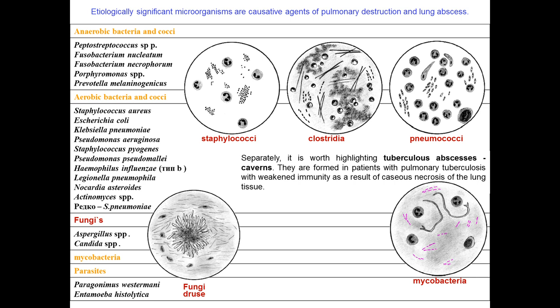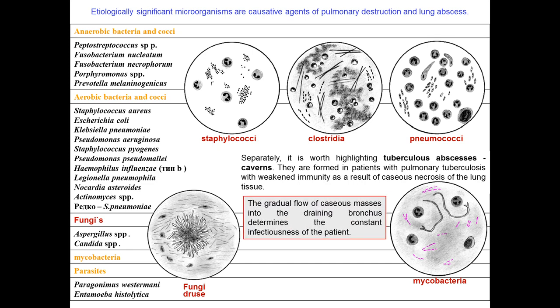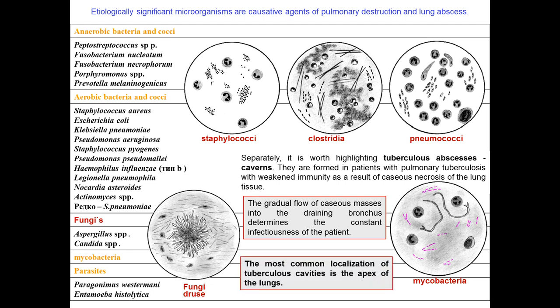Etiologically significant microorganisms — causative agents of pulmonary destruction and lung abscesses — are Staphylococcus, Clostridia, Pneumococcus, and fungi. Separately, there is high-lightning tuberculosis abscesses — caverns — which are formed in patients with pulmonary tuberculosis with weakened immunity, as a result of caseous necrosis of lung tissue. The gradual outflow of caseous masses into the draining bronchus determines the infectiousness of the patient.